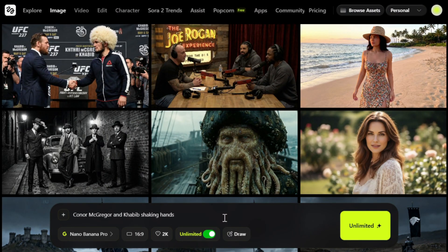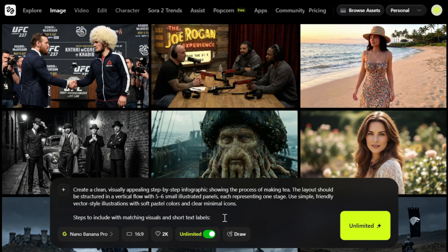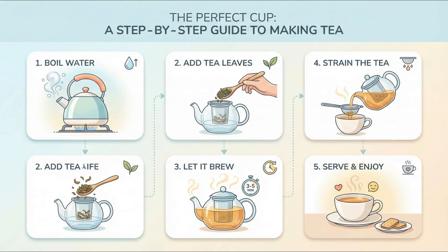Nano Banana Pro also has the ability to generate text perfectly. Let's test that out. I'll ask it to create a step-by-step process for making tea, complete with images and text, by giving it this prompt and then hitting generate. And here's the result. The text rendering is flawless — clear, readable, and perfectly accurate, which is rare for AI. The illustrations are cute, consistent, and flow smoothly through each step of the tea-making process. With its soft colors, cozy style, and clean layout, it feels like a real cookbook infographic. Nano Banana Pro is operating at a completely different level.